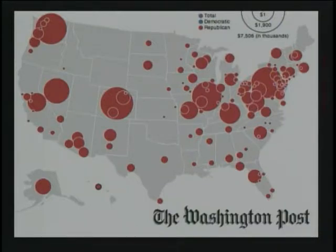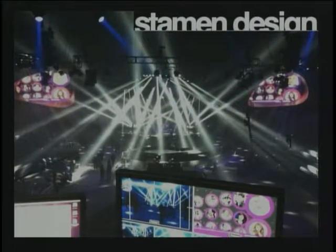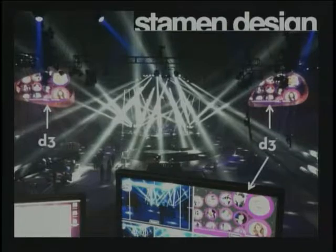D3 has become a prerequisite for many job positions in data science and UI development. It's been adopted widely — the Washington Post used Proto-Viz to visualize campaign finance data, and the New York Times used D3 to create visualizations slicing President Obama's budget proposal. Professional design firms have also adopted it — colleagues at Stamen Design used it for the MTV Music Video Awards backdrop. When we started, we were thinking about data analysts — I had no idea our tools would also be used for Lady Gaga's Twitter tracker.